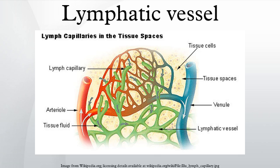Generally, lymph flows away from the tissues to lymph nodes and eventually to either the right lymphatic duct or the largest lymph vessel in the body, the thoracic duct. These vessels drain into the right and left subclavian veins respectively.